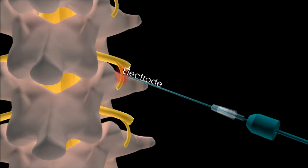Finally, the electrode is heated to stun the nerve, thereby preventing it from transmitting painful signals to the brain.